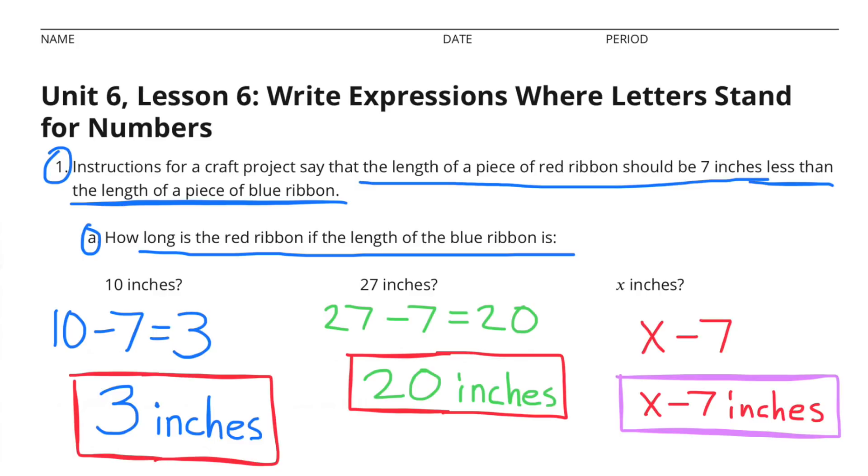How long is the red ribbon if the length of the blue ribbon is 10 inches? 10 inches minus 7 inches is 3 inches.